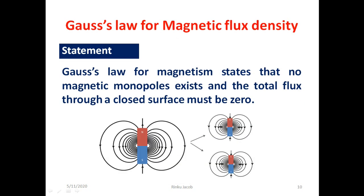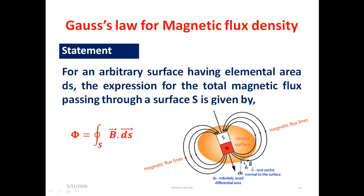Next we discuss about Gauss's law in magnetism. The law states that no magnetic monopoles exist in the universe; in other words, the total flux through a closed surface must be zero. To understand this, we take an arbitrary Gaussian surface around the magnet having elemental area ds. To find the total magnetic flux passing through the entire surface S, we find the magnetic flux through each elemental area ds by taking the dot product of magnetic field vector B passing through an elemental area ds and the area vector of the elemental area.